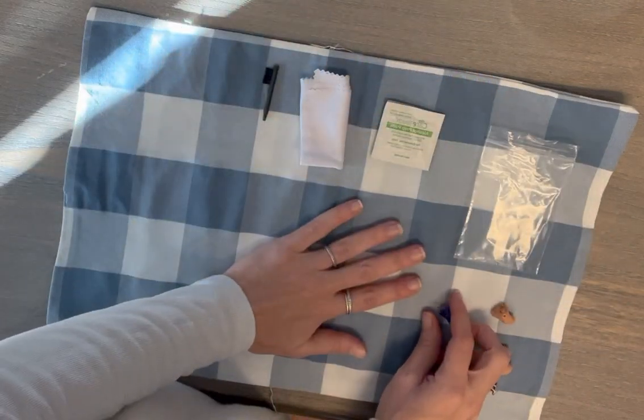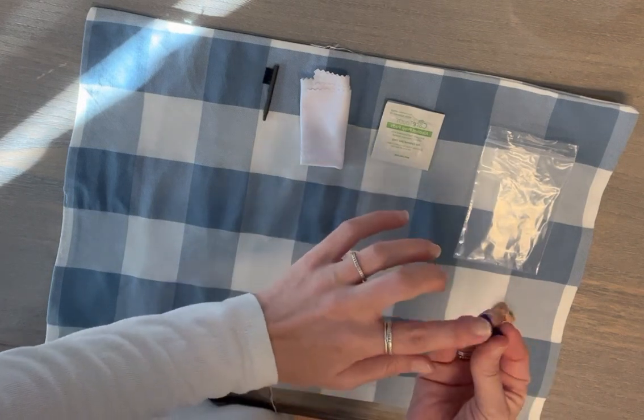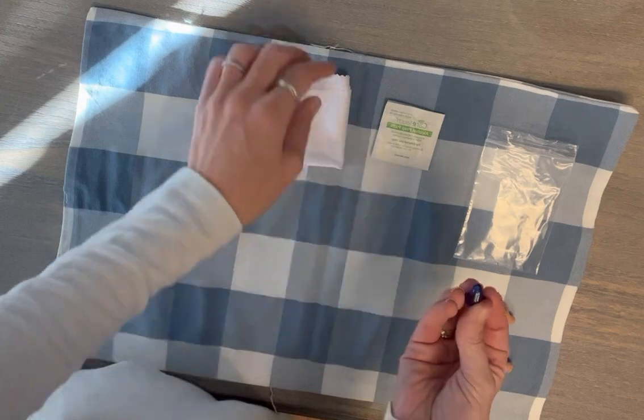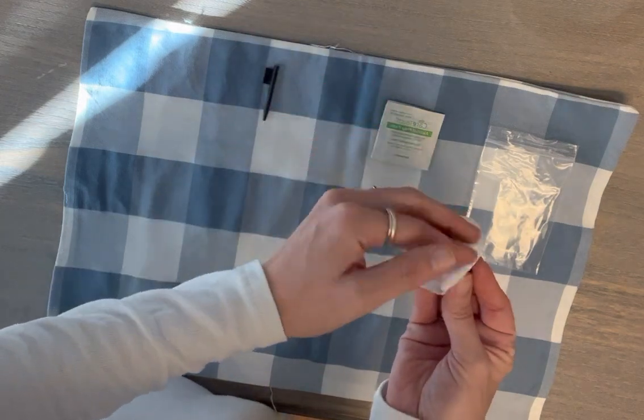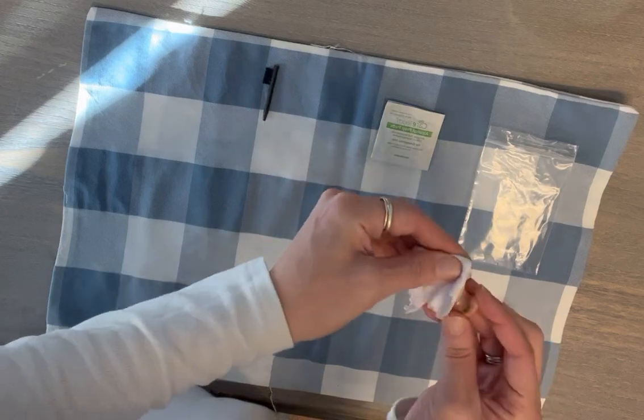When you take them out at night or in the morning before you put them in, all you want to do is wipe the tip that goes into the ear. So you want to take the cloth and just wipe that tip off, similar with all of the different sizes.